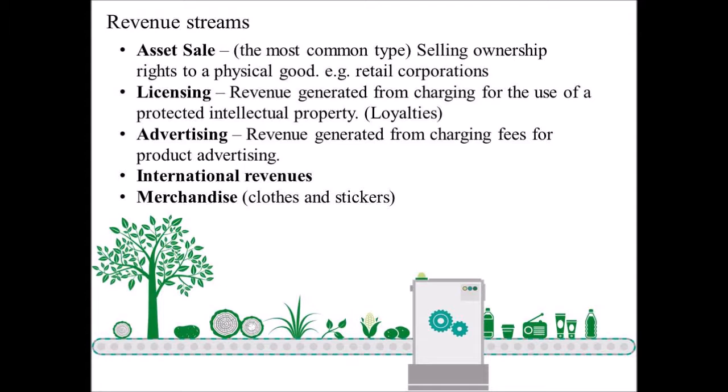Next, let's continue with the revenue streams. There are five streams that can be our main revenue to gain profit from our bioplastic product. The first is asset sale, where we distribute our products to retail corporations — this is the main way for us to gain revenue. The second is licensing, where we provide royalties for others to use our product and gain more profit. The third is advertising, generating revenue by charging fees for product advertising. The fourth is international revenues, where we market our product internationally. The fifth is merchandise, where we can sell branded items such as clothes and stickers, or market our branding to the whole world.